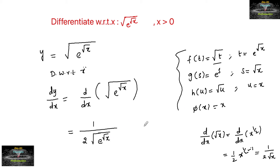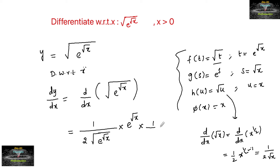Next, differentiation of e^s: since the derivative of an exponential function is e^x, we get e^s, where s is root x. Then we differentiate root u — same as before, 1/(2√u), where u is x. Finally, differentiation of φ(x) = x gives 1.